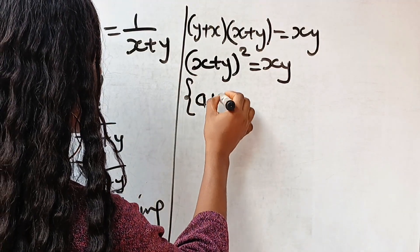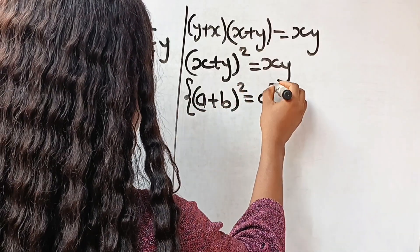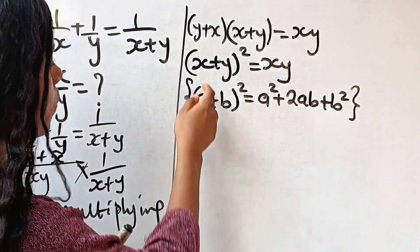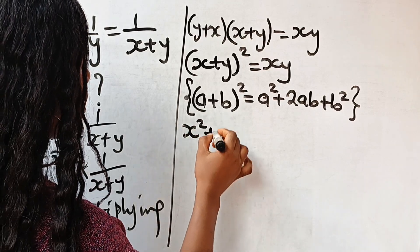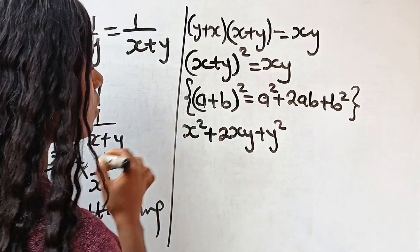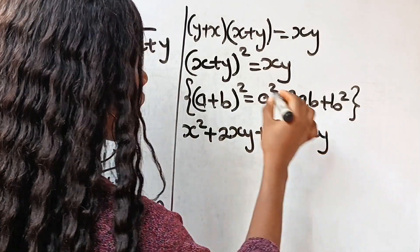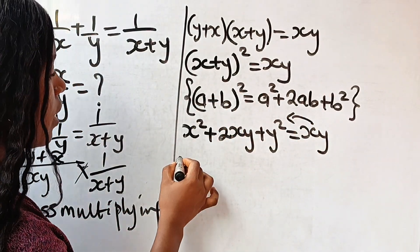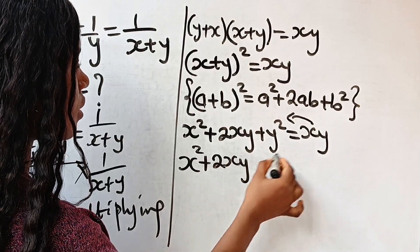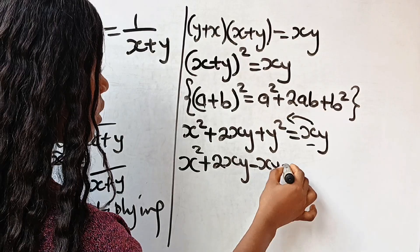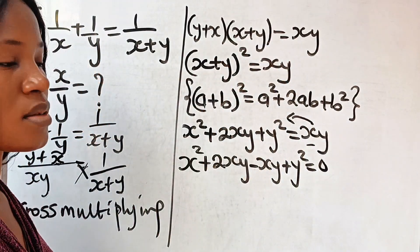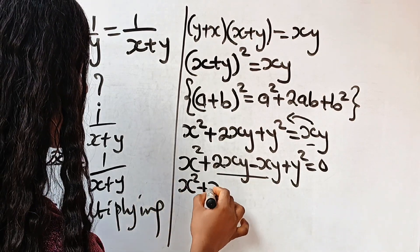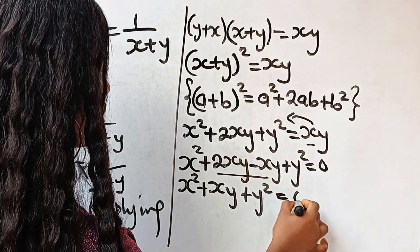Remember that a plus b, all squared, is equal to a squared plus 2ab plus b squared. So we can express this as x squared plus 2xy plus y squared. Now we are going to transfer the xy to the other side, giving us x squared plus 2xy minus xy plus y squared equals 0, which simplifies to x squared plus xy plus y squared equals 0.